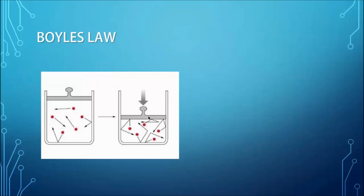Here we have an image — on the left side we have a gas enclosed in a container with a movable lid on top. If we apply a force on the lid causing it to move down, as seen on the right, the volume of the gas will decrease. While that volume decreases, the pressure of the gas increases — so as volume goes down, pressure goes up.